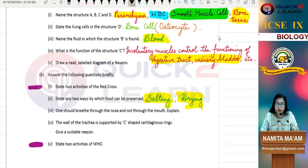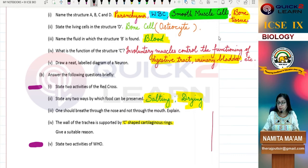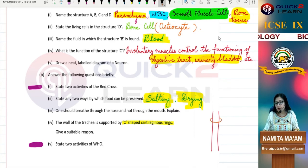The wall of the trachea is supported by C-shaped cartilaginous rings. The trachea has C-shaped cartilaginous rings. The rings are not complete circles.